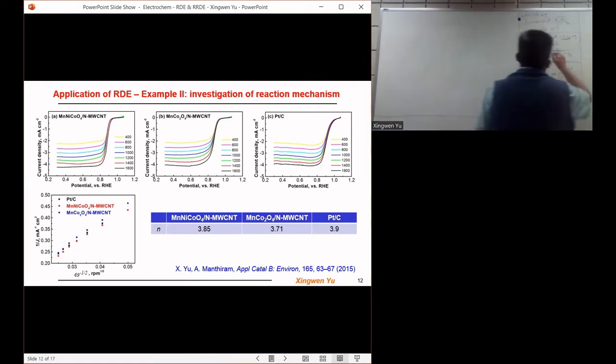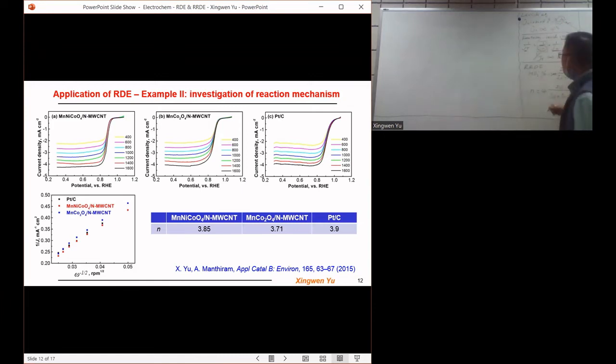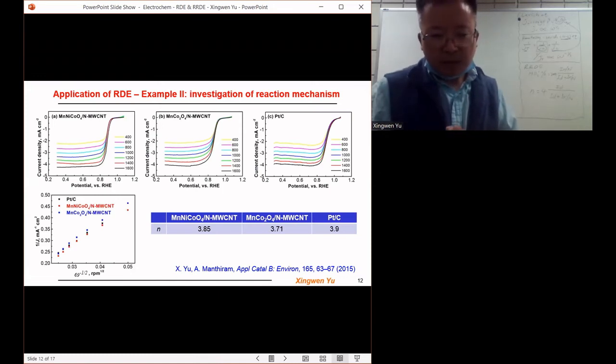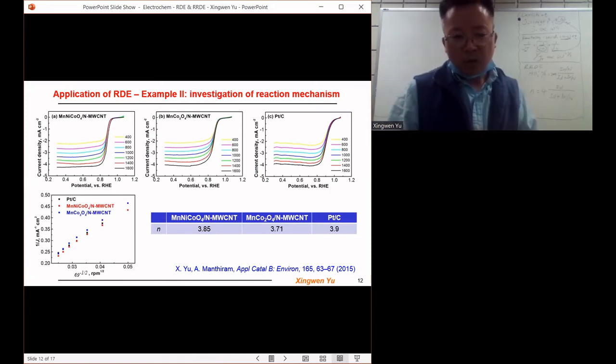Because in this case we know the oxygen in the solution, we know the viscosity of the solution and the concentration of oxygen in the electrolyte. We keep it at the same value. The electron transfer number n for the three catalysts are respectively 3.5, 3.71, and 3.9.